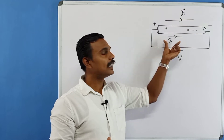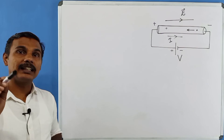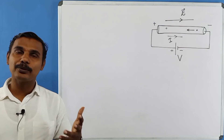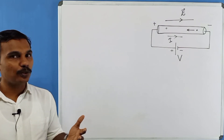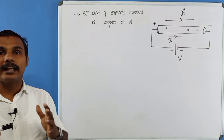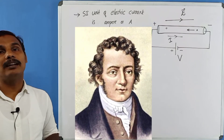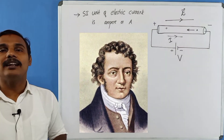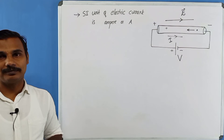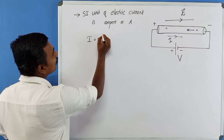When we study electric current, this is a fundamental physical quantity. The SI unit of electric current is Ampere — capital letter A. André-Marie Ampère was the great scientist after whom the unit of electric current is named. The SI unit is Ampere; the mathematical equation is I equal to Q by T.